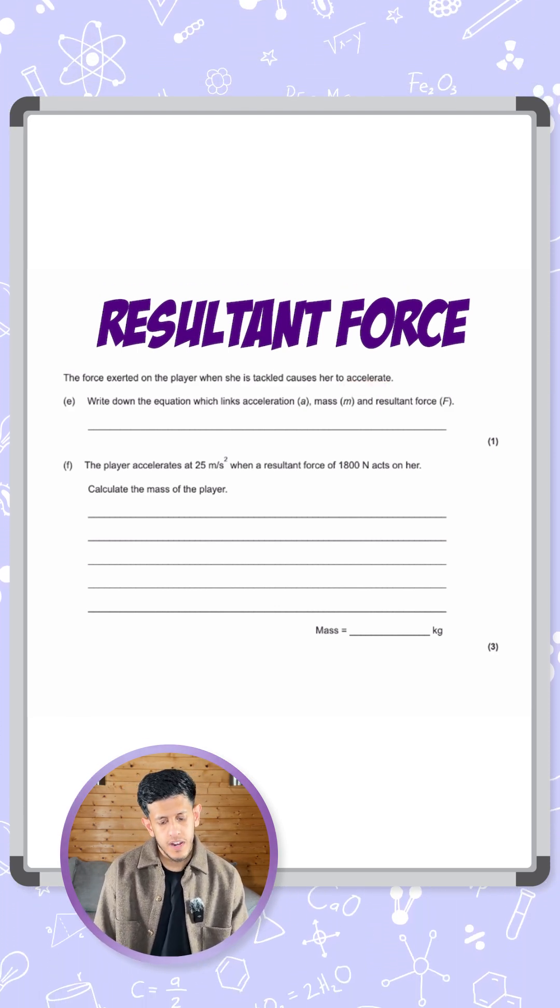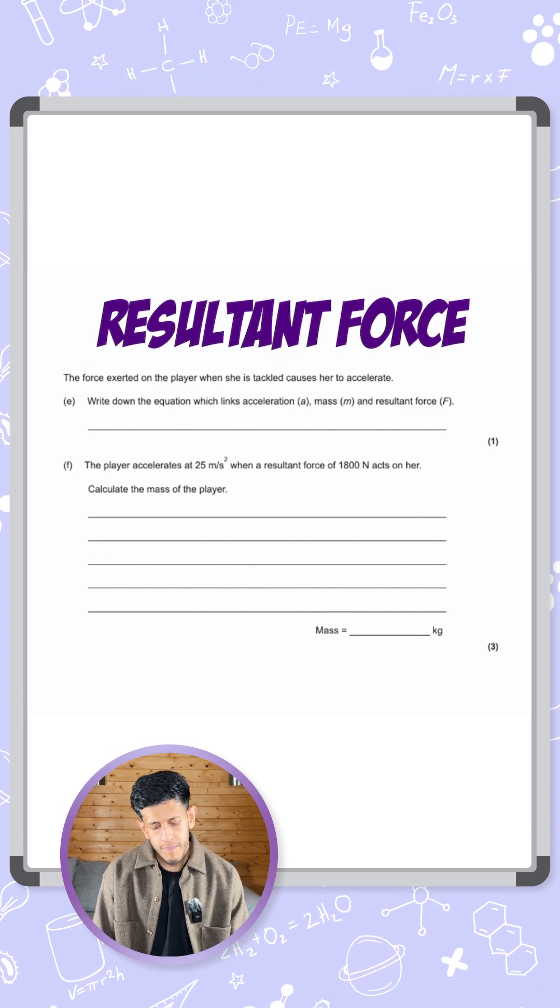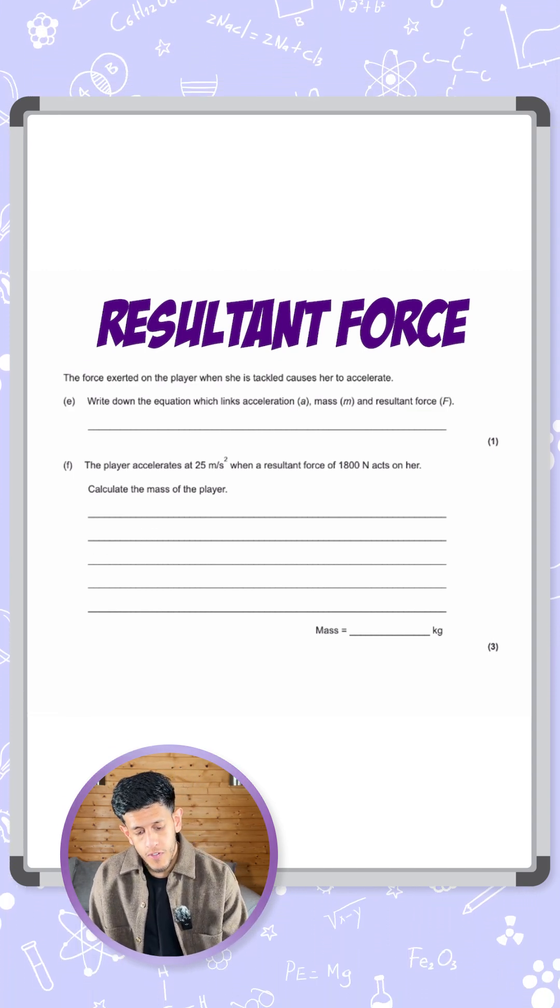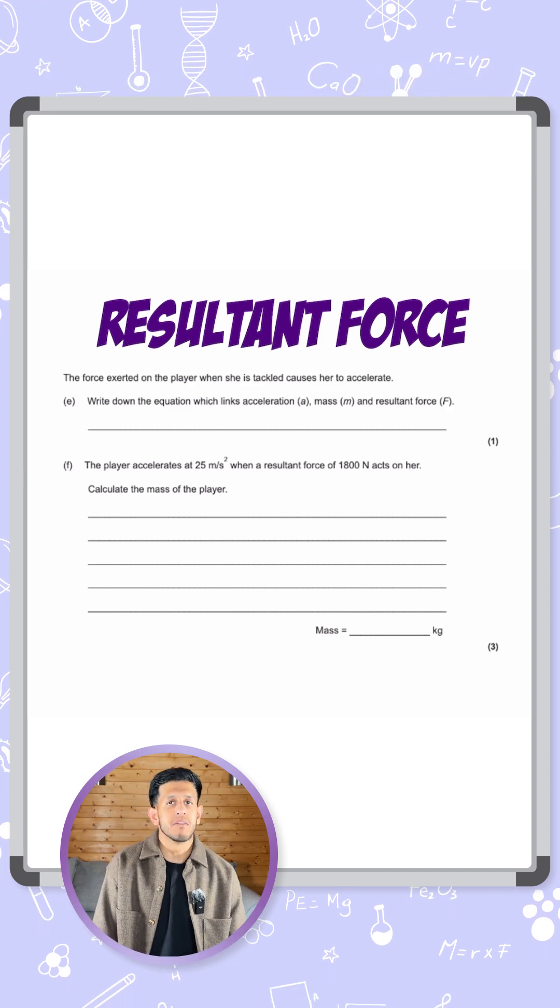Write down the equation which links acceleration, mass and resultant force. Now they've given us the letters as well: a, m, and f, so you can either give your answer in word form or in symbol form.